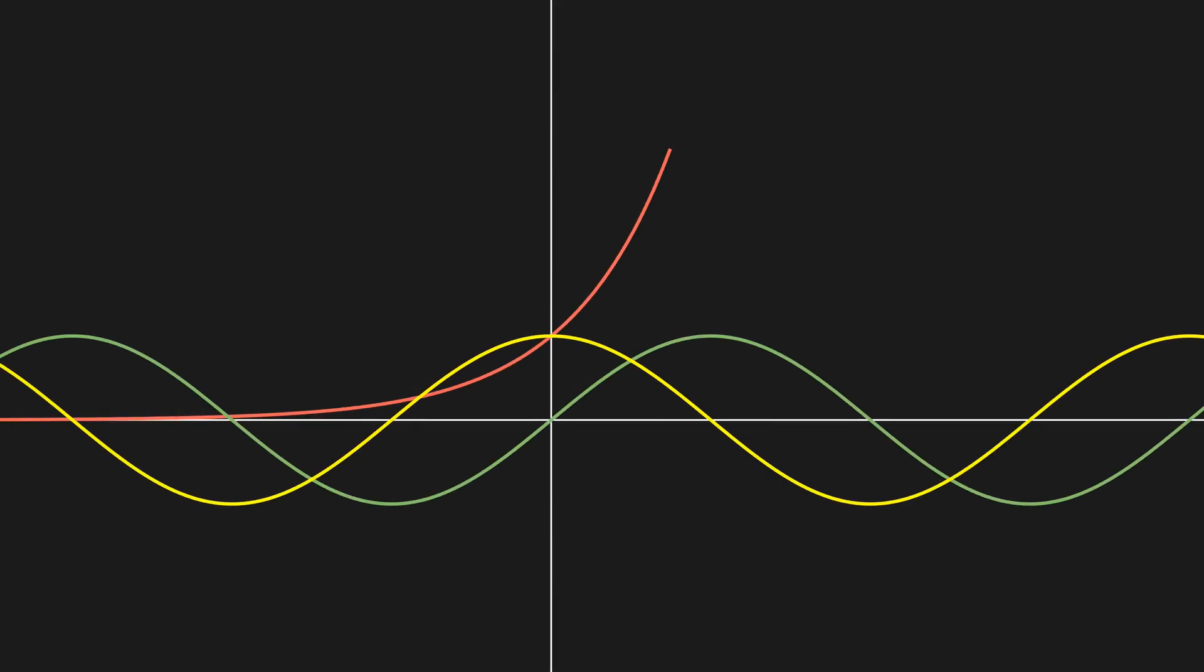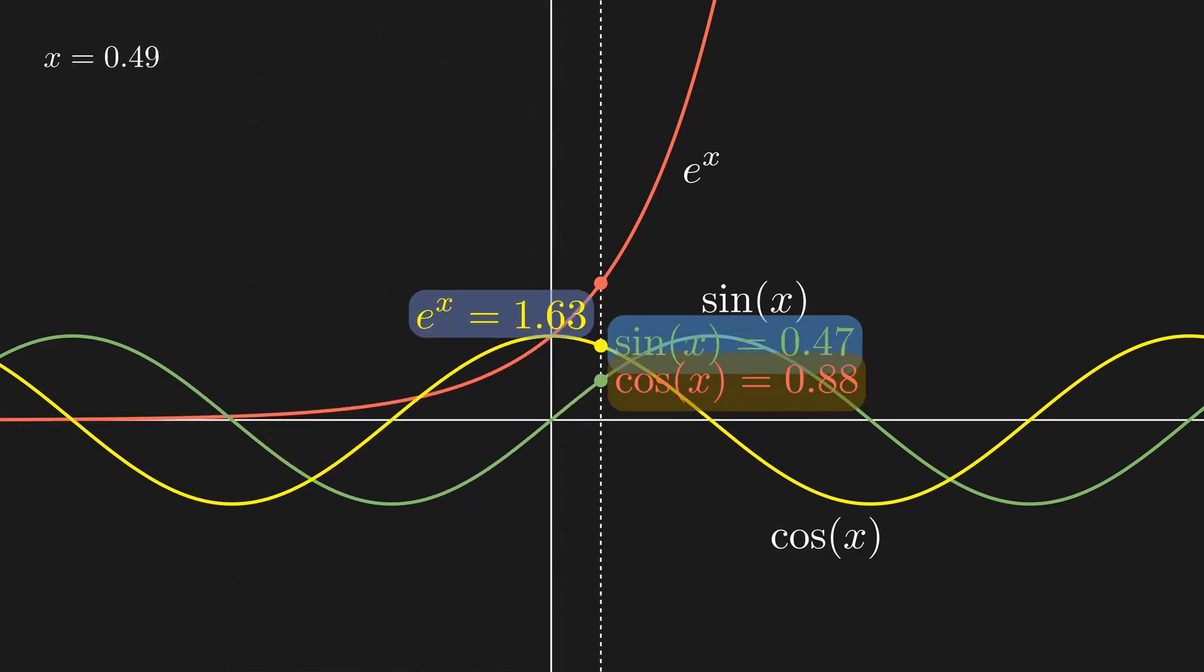How can you calculate functions like e to the x, sine of x, or cosine of x at any point? I mean, how do calculators actually do this?